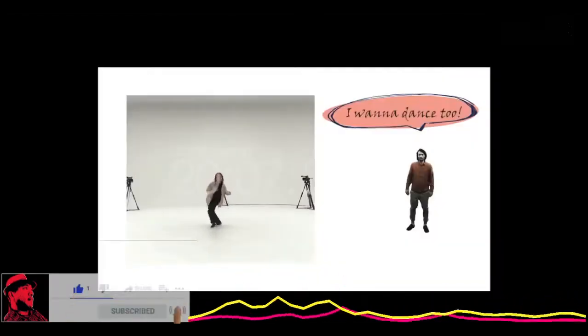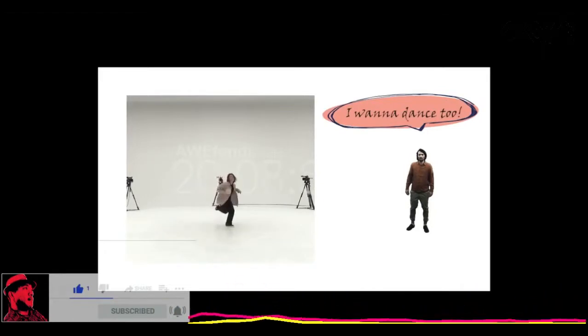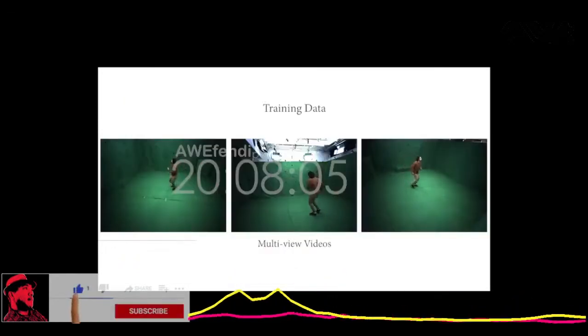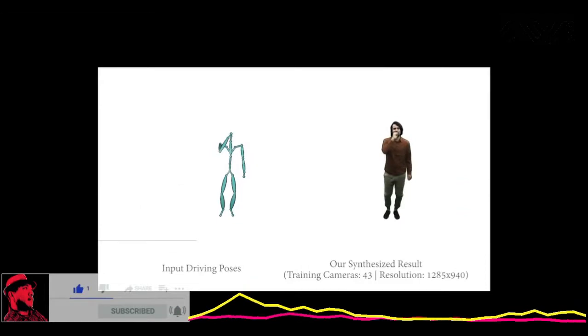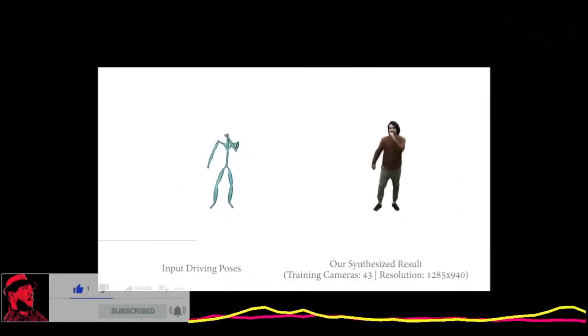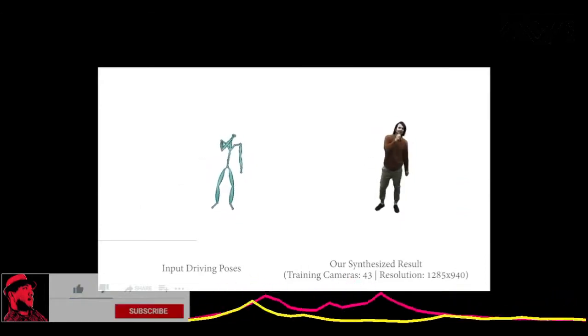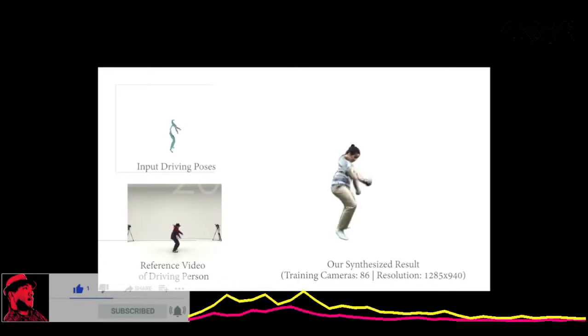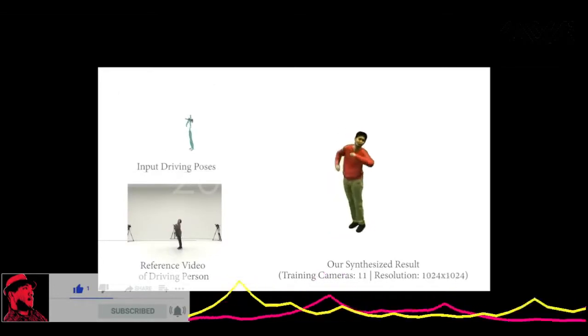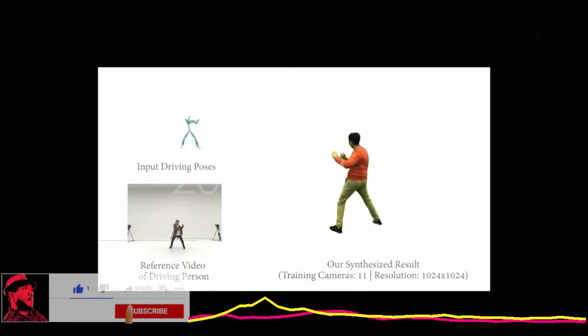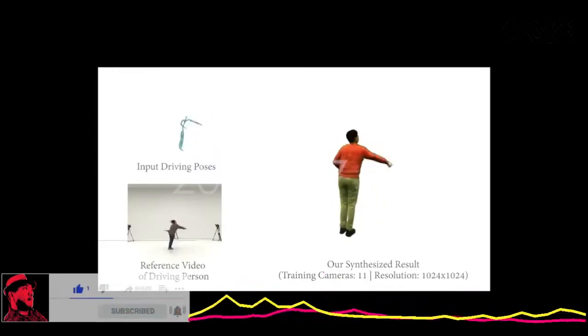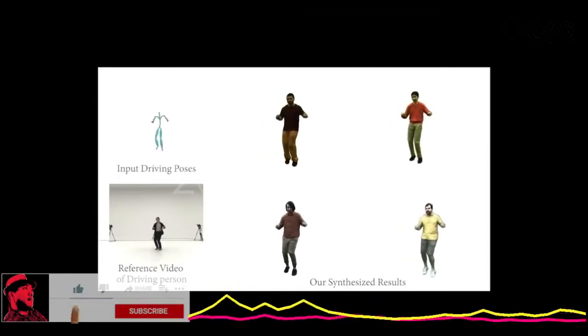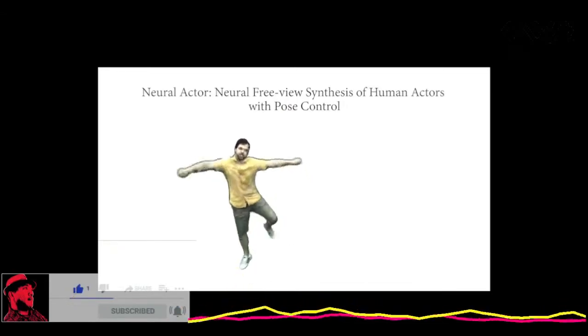Wanna dance like a professional dancer but not good at dancing? Try our method, Neural Actor. Trained on multi-view videos of a person, Neural Actor can synthesize video realistic animations of the person under pose control. We can freely change our viewpoint for rendering. Neural Actor generalizes well to normal and challenging poses. Note the pose-dependent deformations and pose and view-dependent dynamic appearance effects in the clothing. Neural Actor enables visual effects such as synchronized crowd dancing. Join our talk for more details.